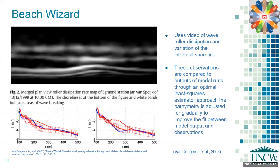Another approach is known as Beach Wizard, which uses a few different methodologies, one of which is using video of wave roller dissipation and variation of the inter-tidal shoreline, which are then time averaged. These observations are compared to outputs of model runs initialized by a snapshot guess. Through an optimal least squares estimator approach, the bathymetry is adjusted gradually to improve the fit between model output and observations. You can see an example here where the dashed red line is the initial guess, the blue line is the measured bathymetry, and the solid red line is the final guess along with error bars.